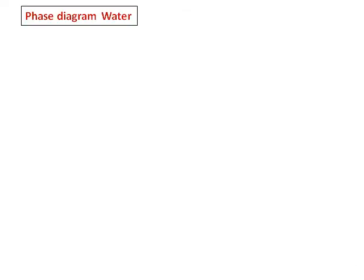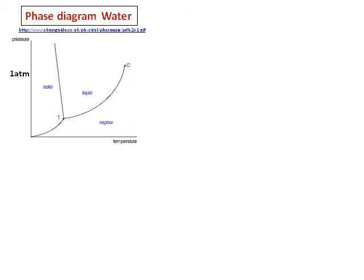Now let's look at the phase diagram of water. Here also it is divided into three parts: solid, liquid, and gas or vapor. At one atmosphere, when I draw a line, the solid-liquid transition gives the temperature corresponding to the melting point. Similarly, when it goes from liquid to vapor state, that temperature corresponds to the boiling point. This is what we saw in the previous case as well.